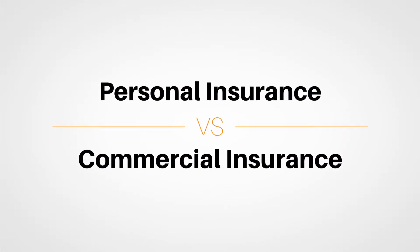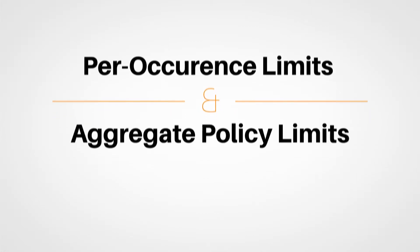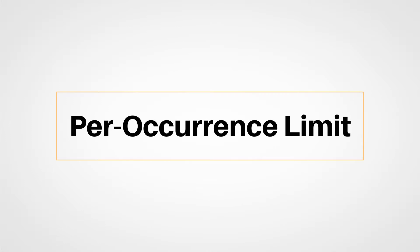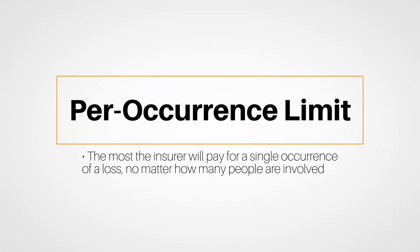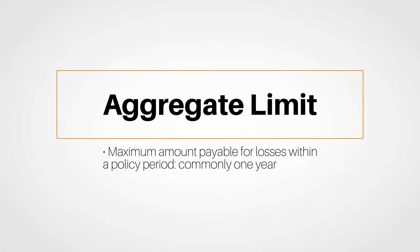One of the major differences between personal and commercial insurance is the idea of per occurrence and aggregate policy limits. A per occurrence limit is the most that the insurer will pay for any one occurrence for a loss, no matter how many people are involved. Aggregate limits are the maximum payable for losses within a policy period, commonly one year in commercial contracts. Personal lines don't have aggregate limits as they are all per occurrence policies.